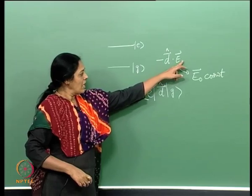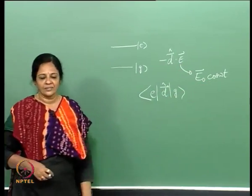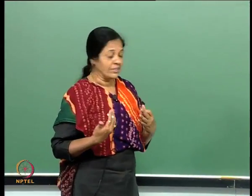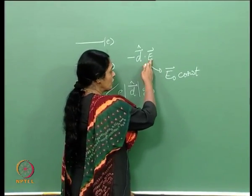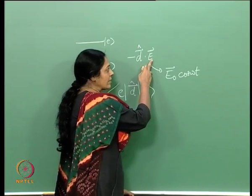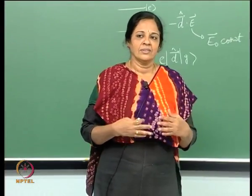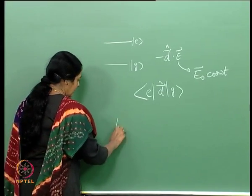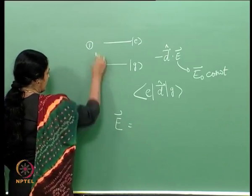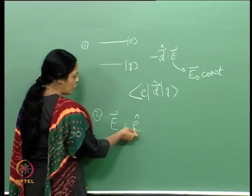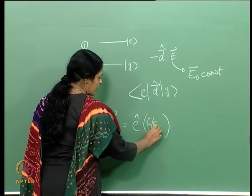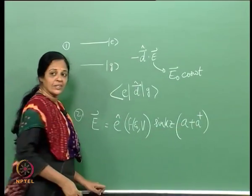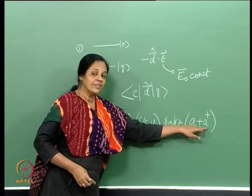This part of the interaction was quantum, while the electric field was merely E naught cos(omega t). I then moved on to another model — radiation field inside a cavity — which is a fully quantum mechanical model. The field is treated quantum mechanically: the electric field is written in terms of photon destruction and creation operators, and the electric field had dependence on the photon creation and destruction operators as A plus A dagger.